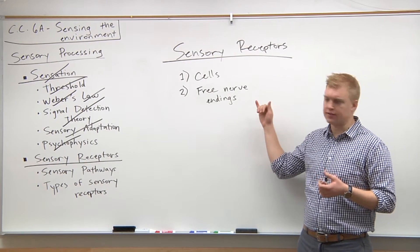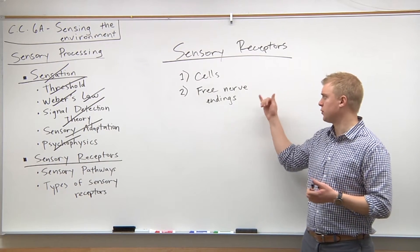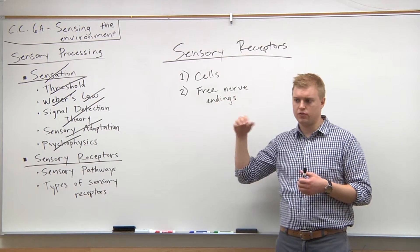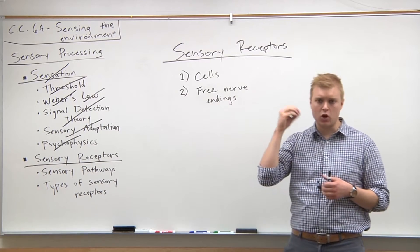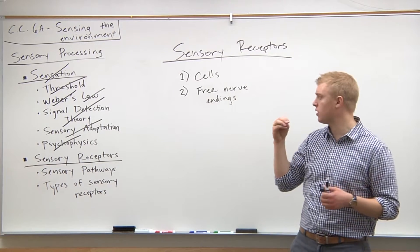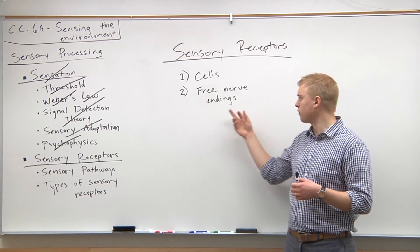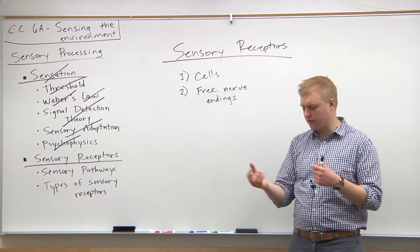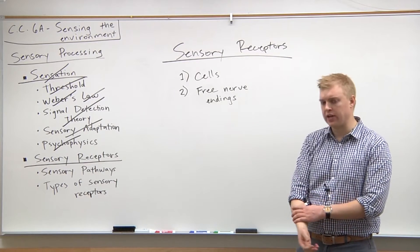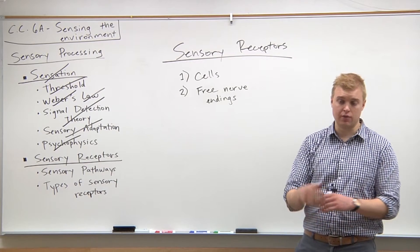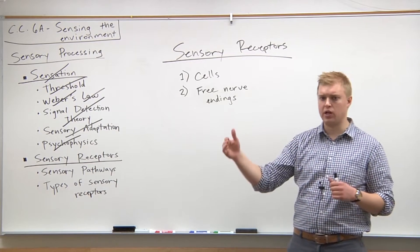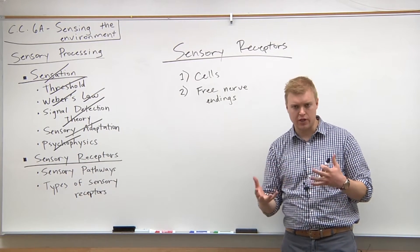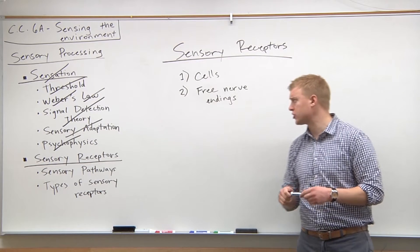There are two different kinds of sensory receptors. You have cells — for example, the hair cells in the cochlea of the ear — and free nerve endings, like the free nerve endings in the dermal layer of your skin that detect touch and pressure.